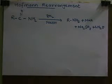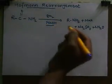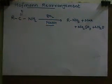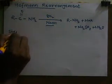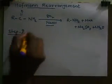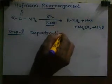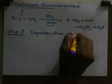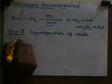The most important part of this rearrangement is its mechanism. Let's see what is the mechanism of Hofmann rearrangement. Step one of the mechanism is deprotonation — that is, deprotonation of the amide is the first step.